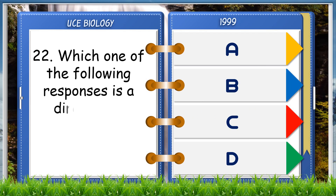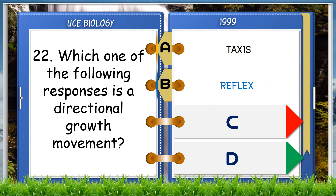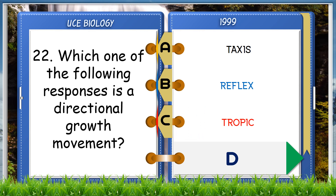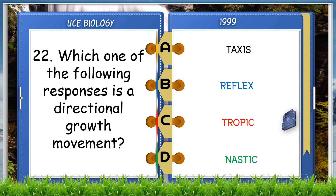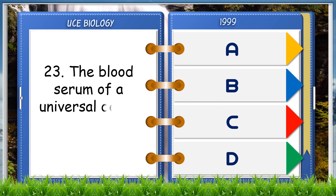Which one of the following responses is a direction of growth movement? A. Taxis, B. Reflex, C. Tropic, D. Nastic. The answer is C, tropic.